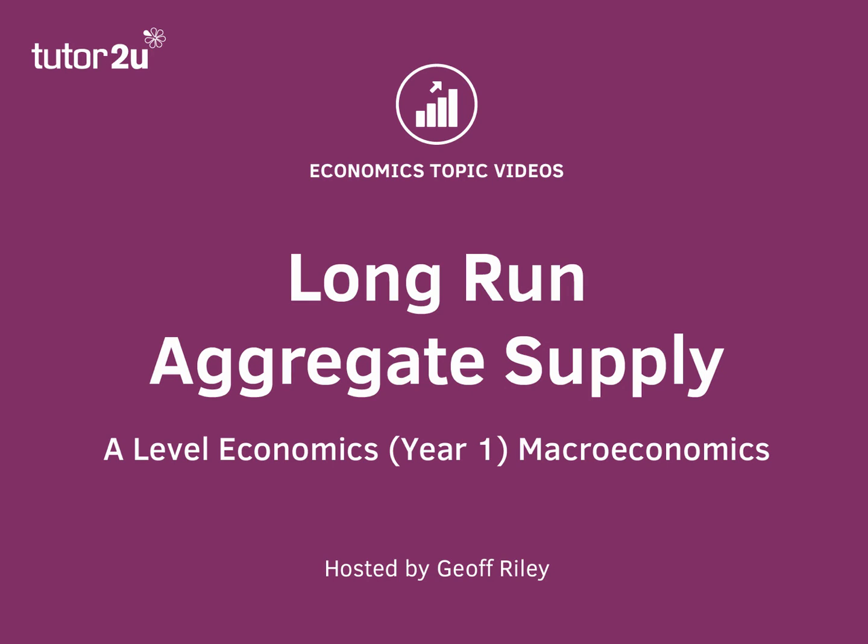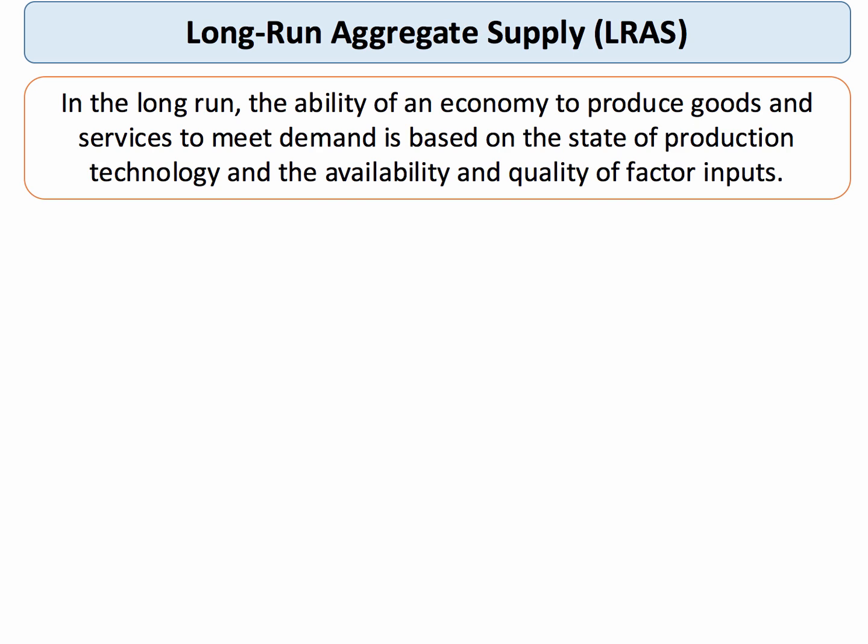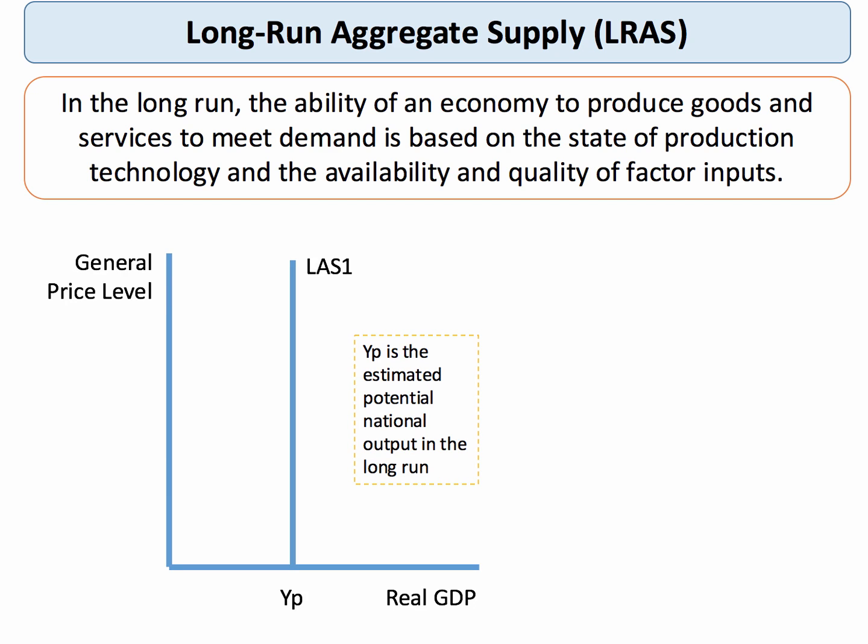In this topic video we're going to focus on long-run aggregate supply. In the long run, the ability of an economy to produce goods and services is based on the state of production technology and the availability and quality of factor inputs. You've probably come across this topic before when looking at the production possibility frontier and the factors that caused the PPF to shift outwards over time. We're going to express it using a long-run aggregate supply curve, drawn as a vertical line.